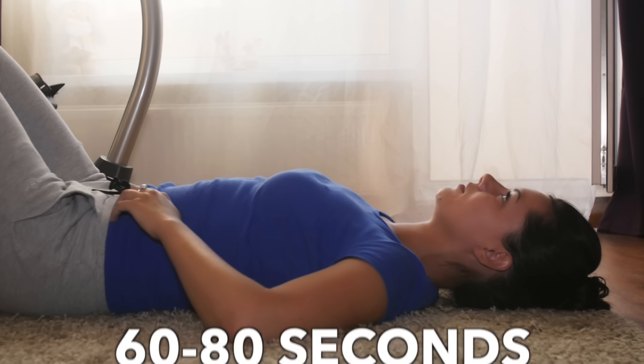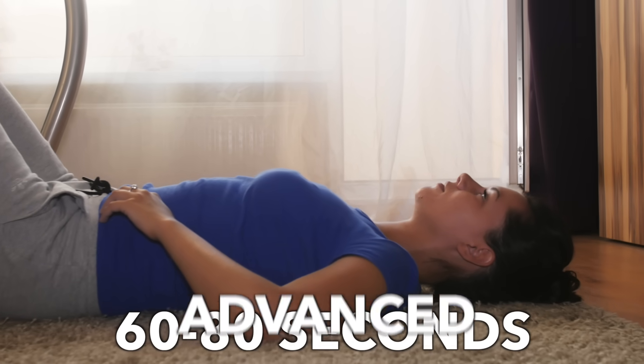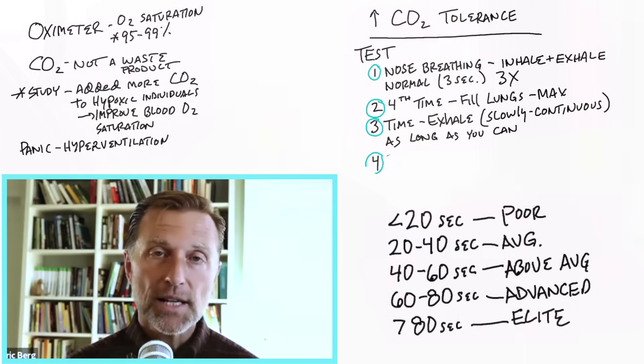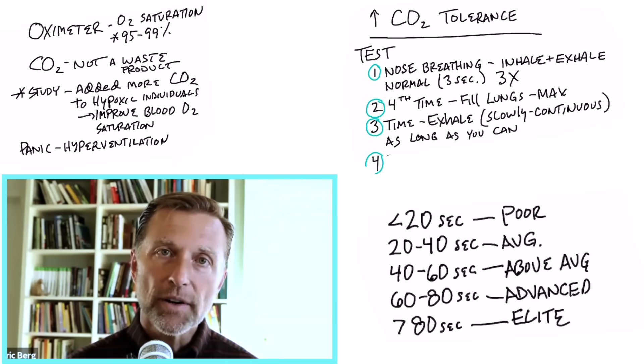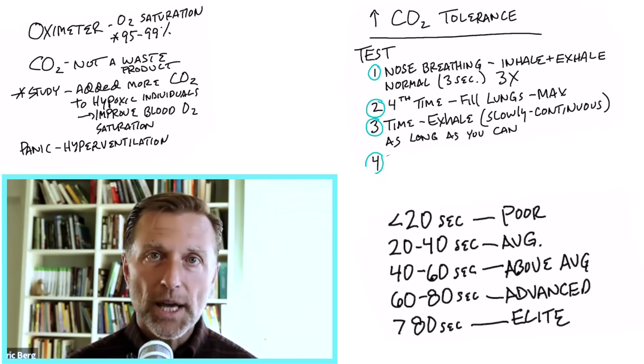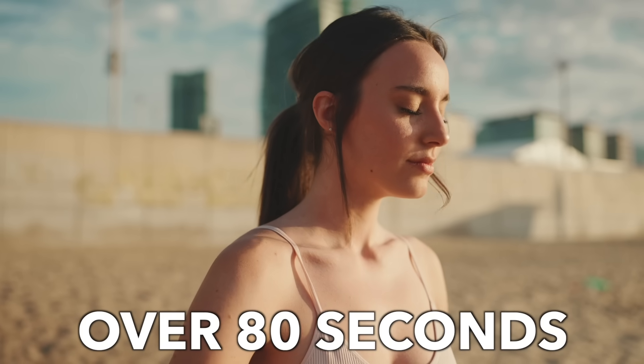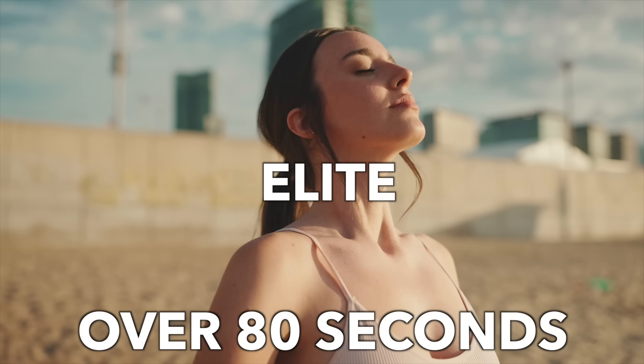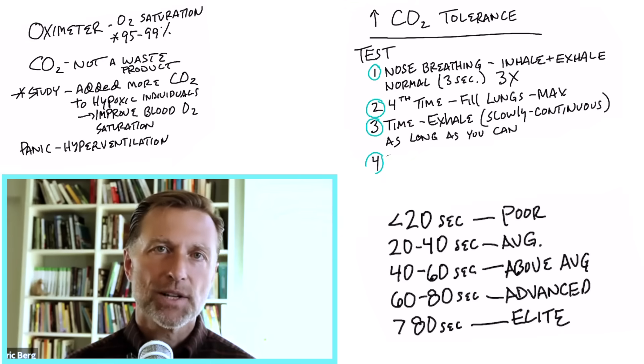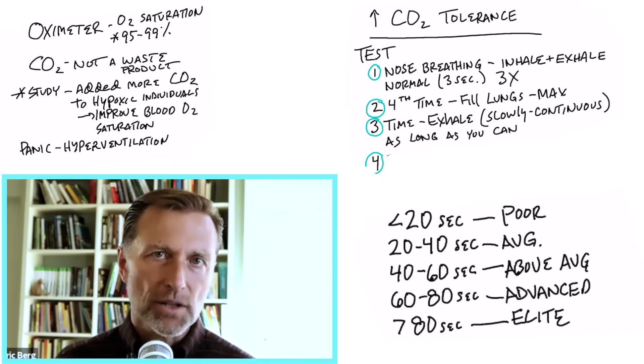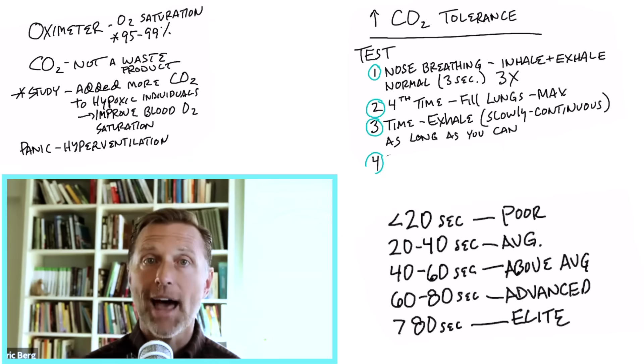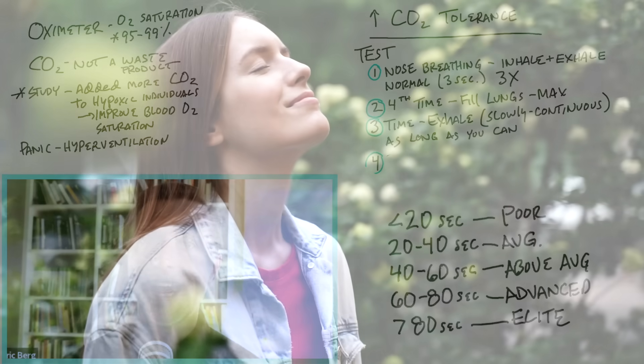Now, if that timing was between 60 and 80 seconds, you are considered advanced. You have good stress tolerance. You have good endurance. You're in pretty good shape. You can handle stress pretty good. If you're over 80 seconds, you are in the category of elite. This is like an elite athlete. You have excellent stress responses, excellent cardiovascular, great tolerance to CO2. So that is the goal, is to get you over 80.